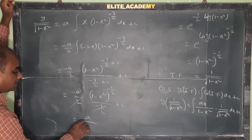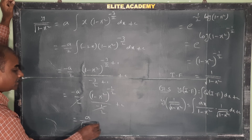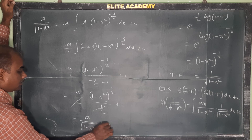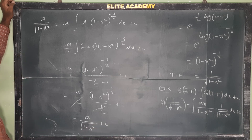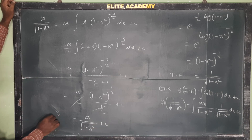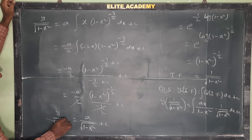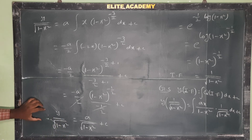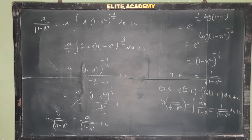On the left side we have y/√(1 - x²), so the final general solution is: y/√(1 - x²) = a/√(1 - x²) + c. This is the general solution of the given problem.